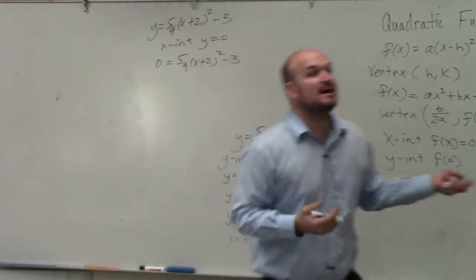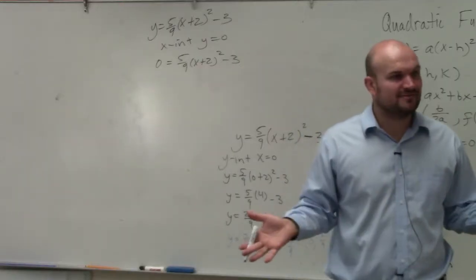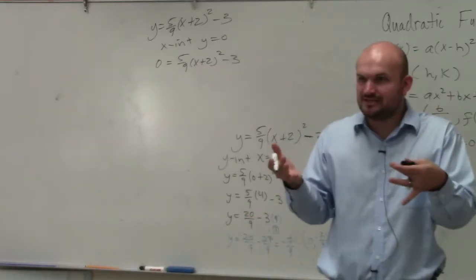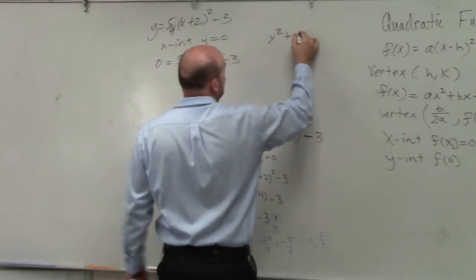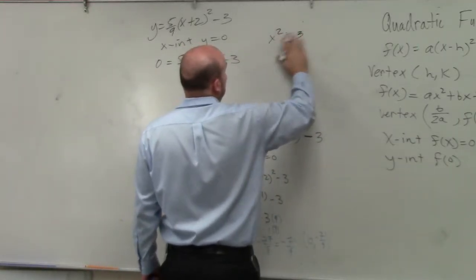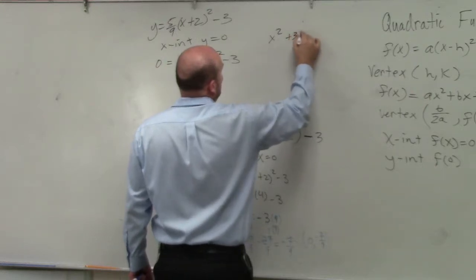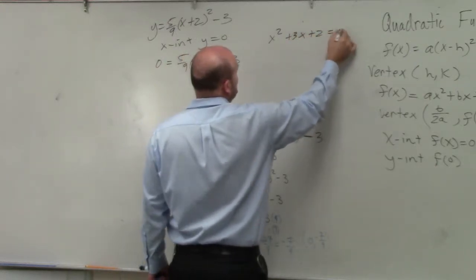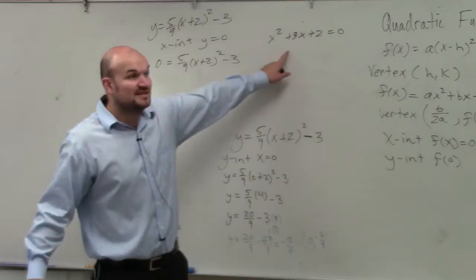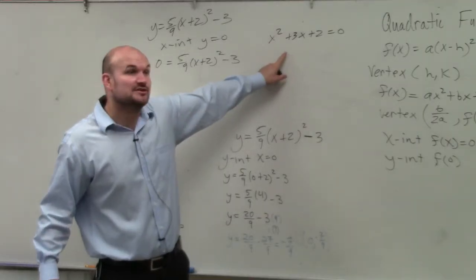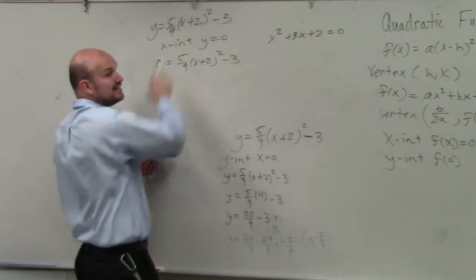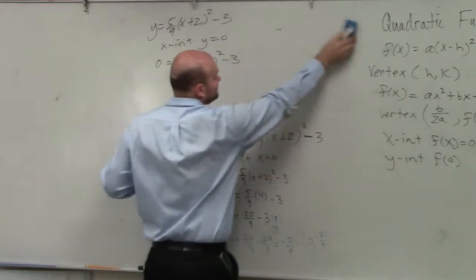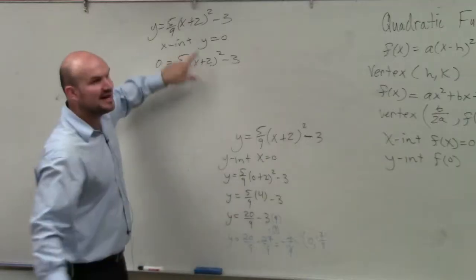Now, what's nice about it in vertex form is you guys don't have to factor. Remember when we did quadratics all the time, we had to factor, right? We did this at the beginning of the year: x squared plus 3x plus 2 equals 0. The only way to solve this was to factor, and then use zero product property. Well, that's a quadratic in standard form. This is a quadratic in vertex form.